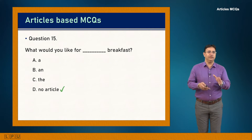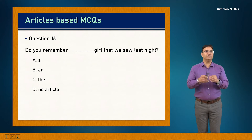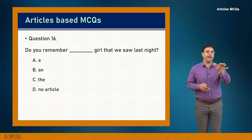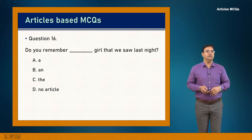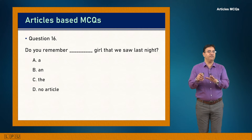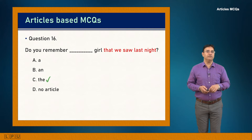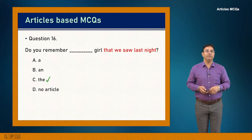Question 16: Do you remember dash girl that we saw last night? The girl is specific — identified by the clause 'that we saw last night.' 'A' is ruled out because 'girl' starts with a consonant sound, and 'the' is correct because it is definite. Answer is C: 'Do you remember the girl that we saw last night?'